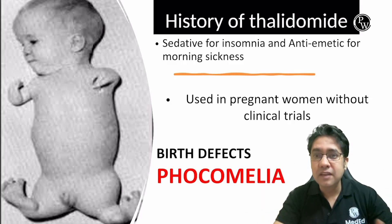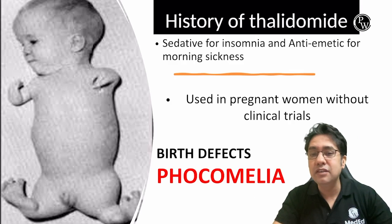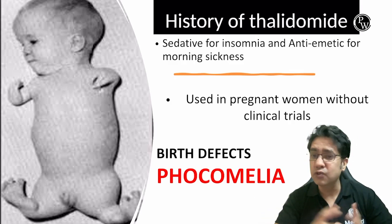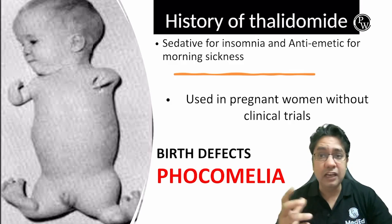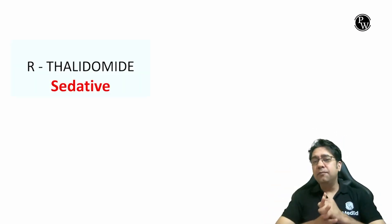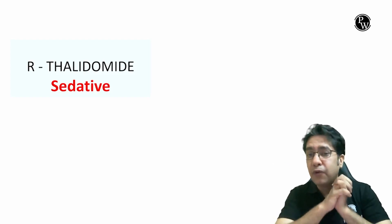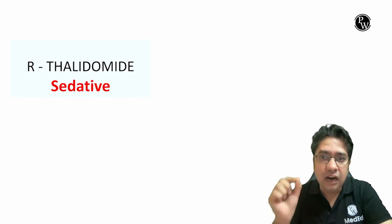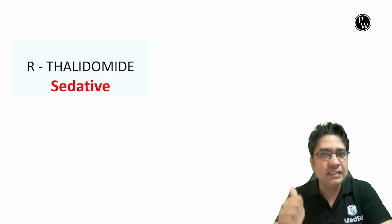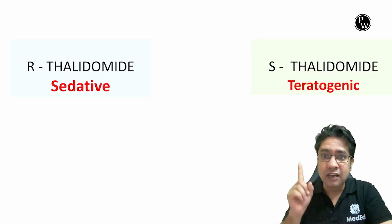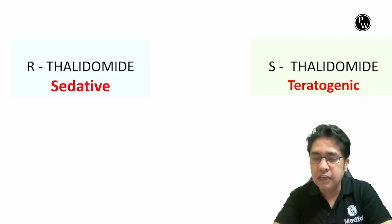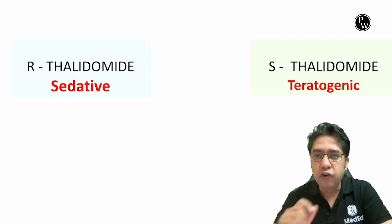Another interesting point is that Thalidomide has two enantiomers. One is the R form of Thalidomide, which is sedative. But the S enantiomer of Thalidomide is teratogenic, which causes phocomelia.